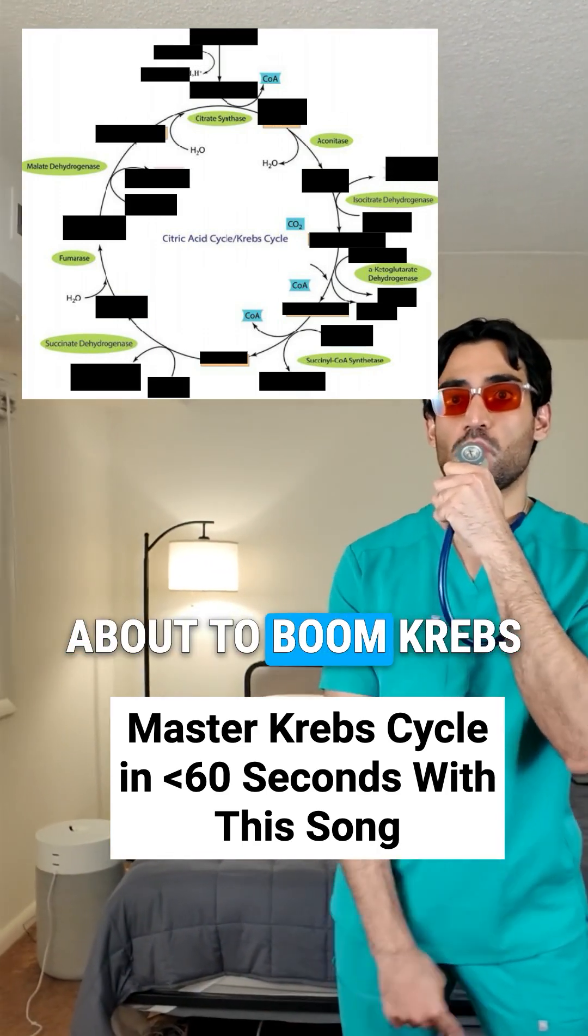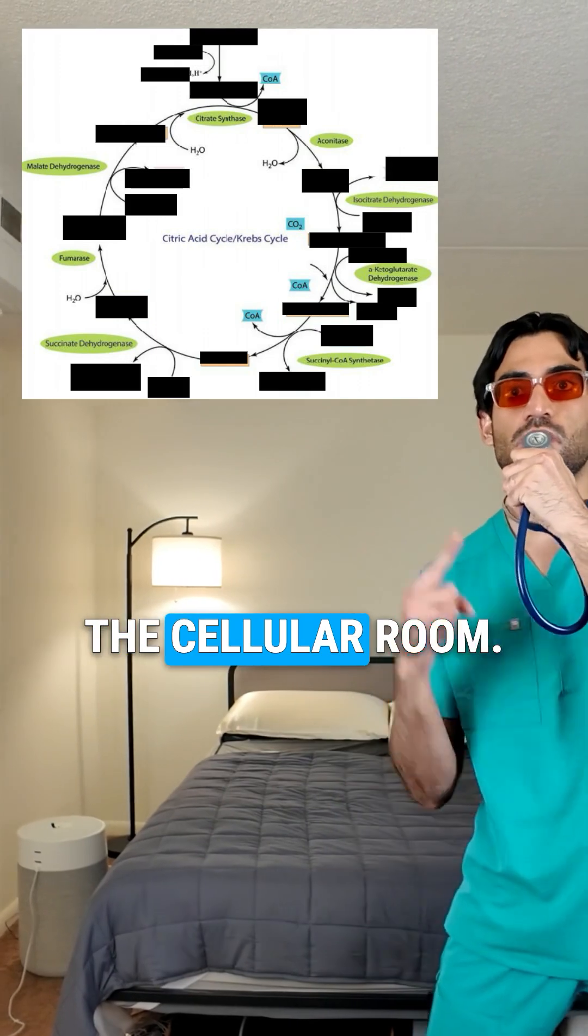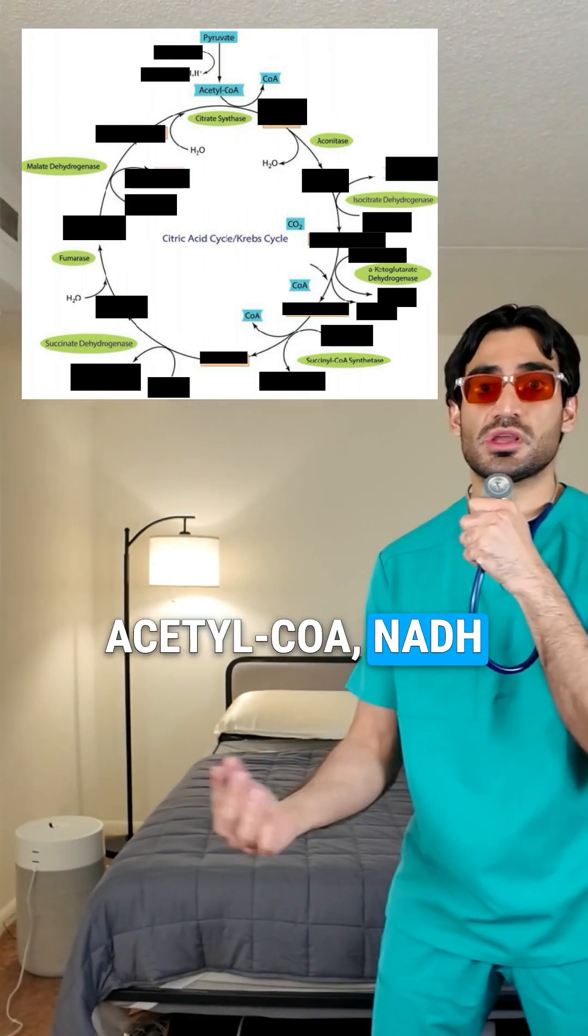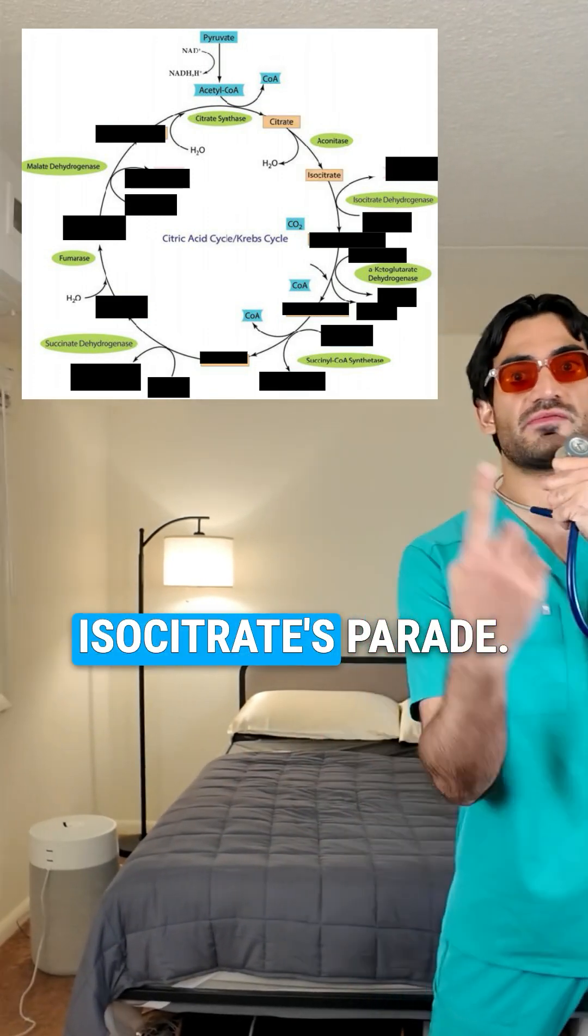Mitochondrial stage, energy's about to bloom. Krebs cycle spinning in the cellular room. Pyruvate, Acetyl-CoA, NADH made, citrate forms and it's citrate's parade.